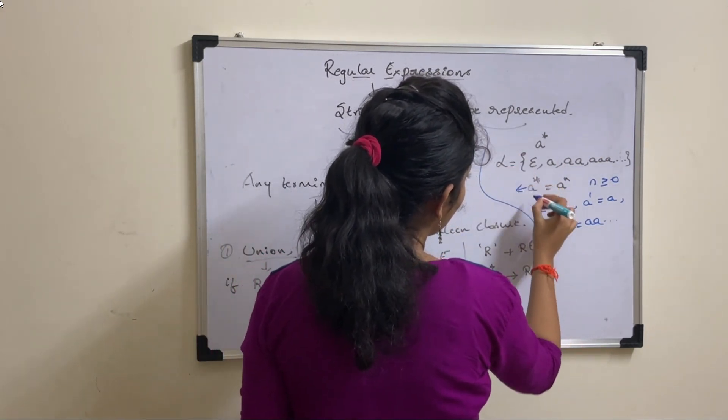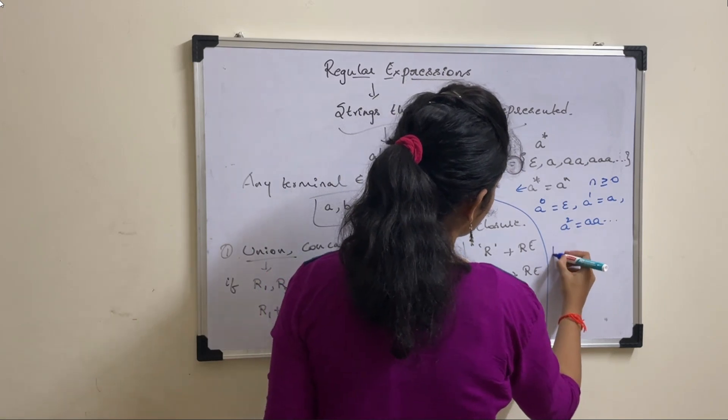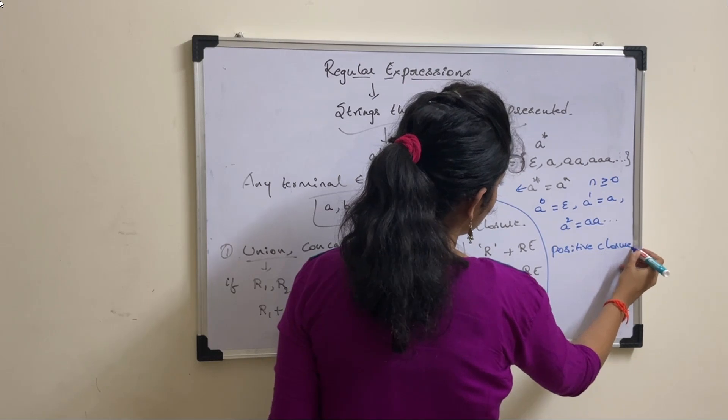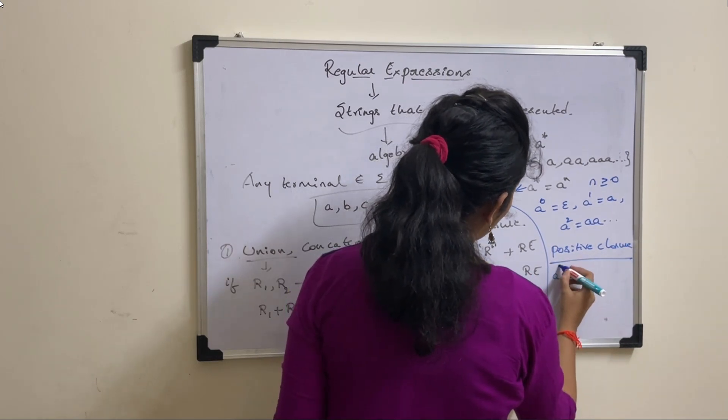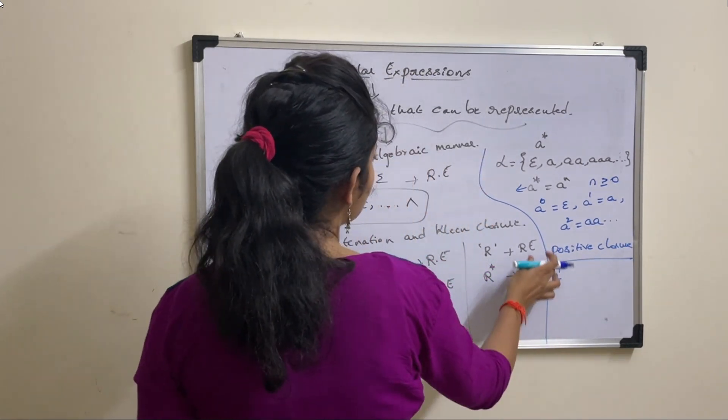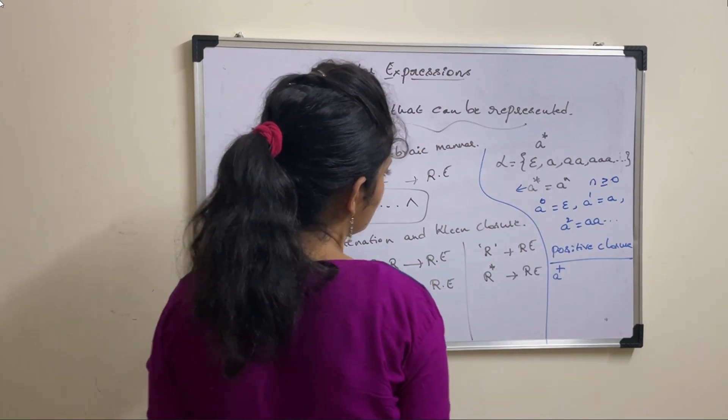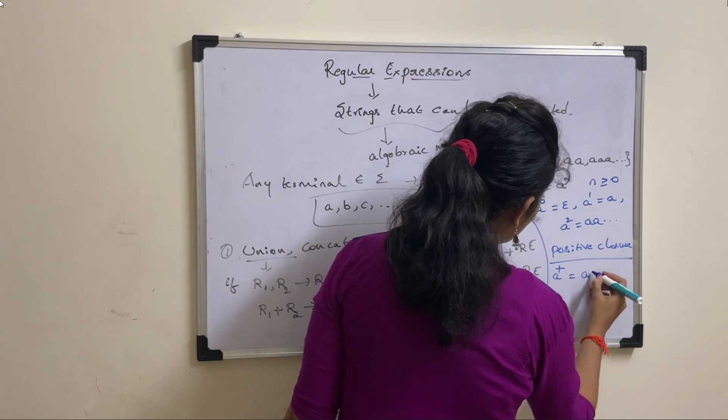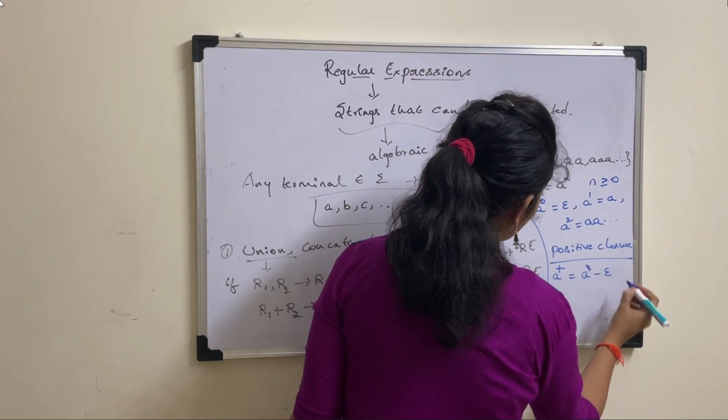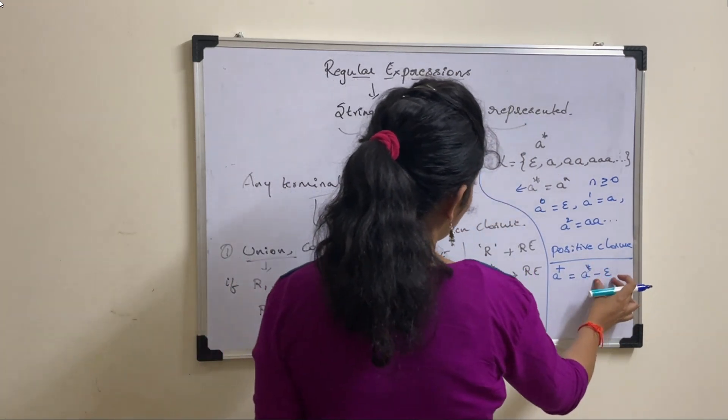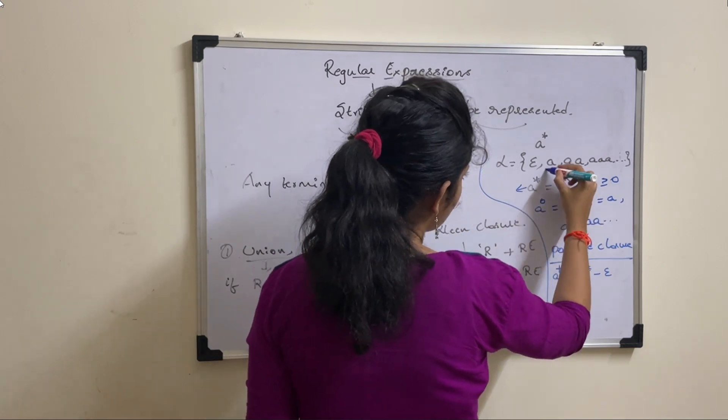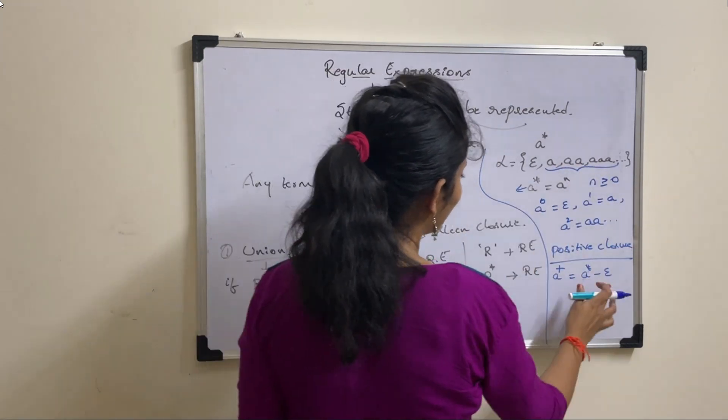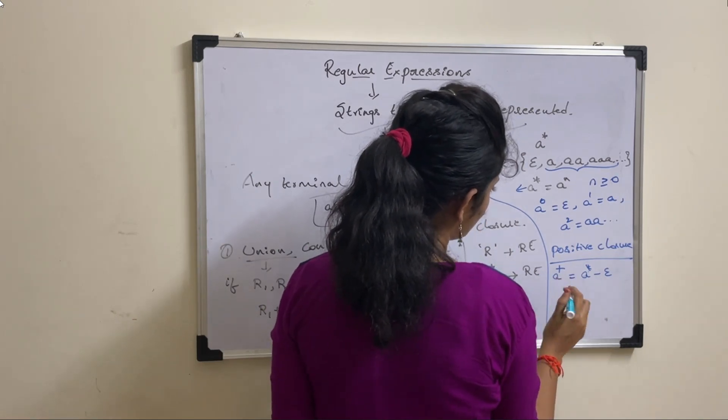This we call it as Kleene closure. What is meant by positive closure? Positive closure is represented as A plus. What is difference between this A star and A plus? A plus can be written as A star minus epsilon. That means, excluding epsilon, everything which is present in this language, they come under A plus, that is positive closure.